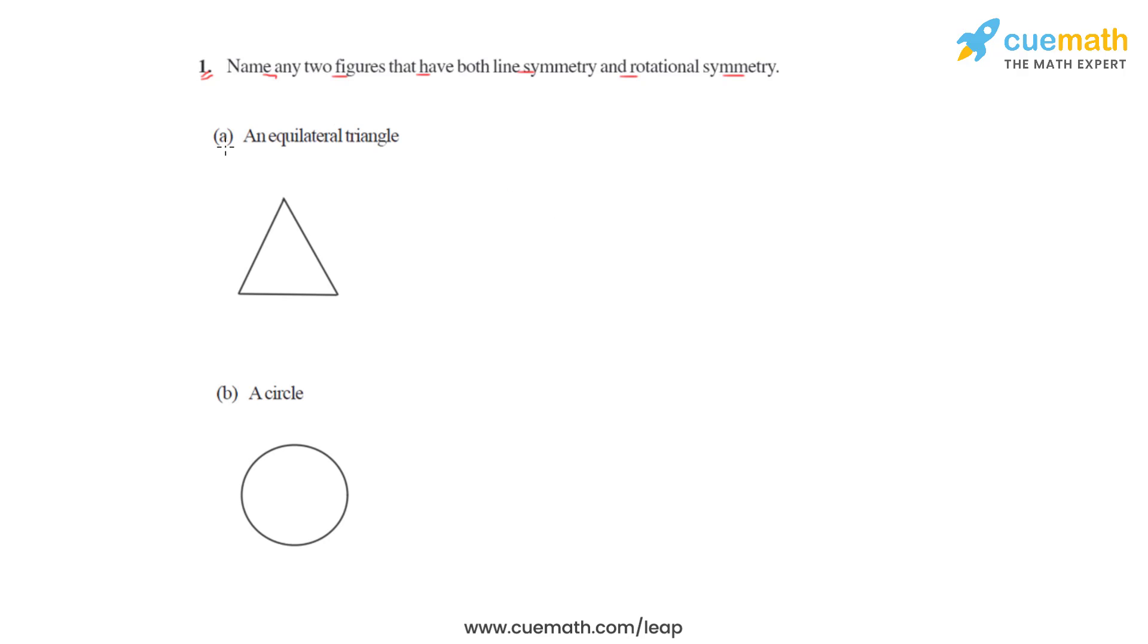The first figure is an equilateral triangle which has both line and rotational symmetry, and the second figure is a circle which again has both line and rotational symmetry.